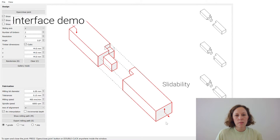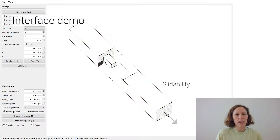So this timber, for instance, can slide out and up. But when I add a voxel here, it can slide out only.